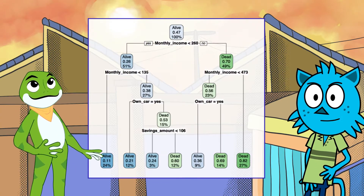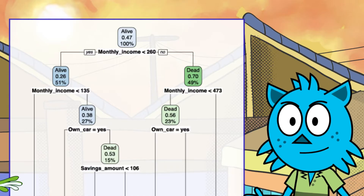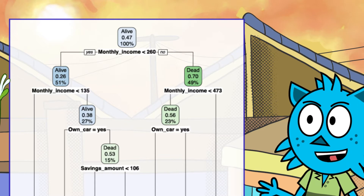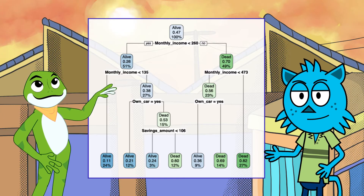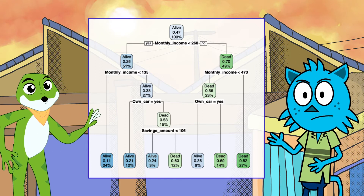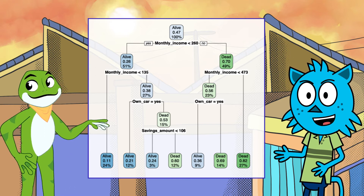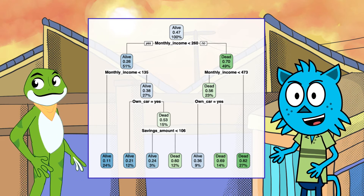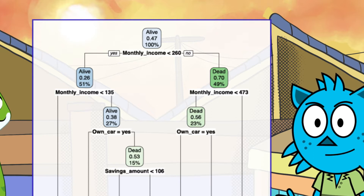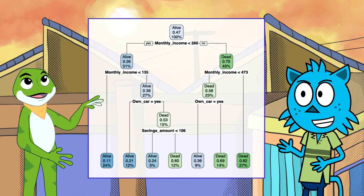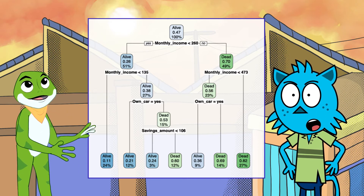Wow, this looks great, CP! Well done! At the root node, we can see that the overall probability of surviving is close to 0.5. That's right, Teddy — one player wins, another loses. Then, if a player's monthly income is less than $260, the probability of surviving is 0.26%. We can follow the decisions in this tree to find out if a player ends up surviving or dying, based on the conditions.